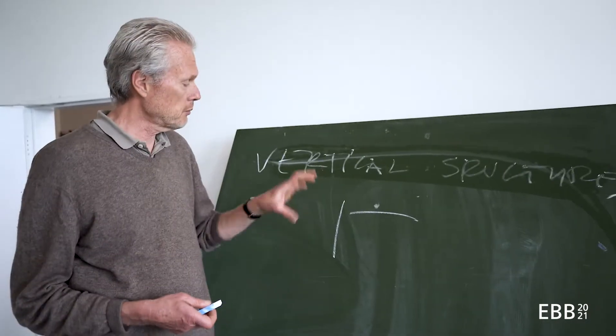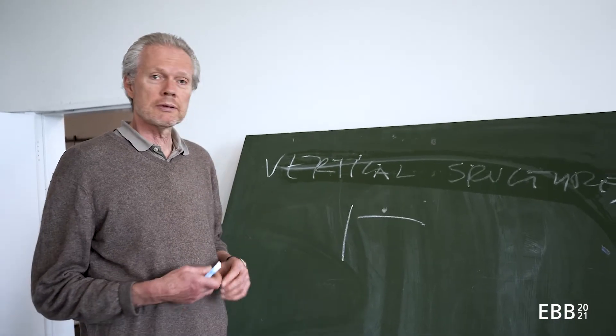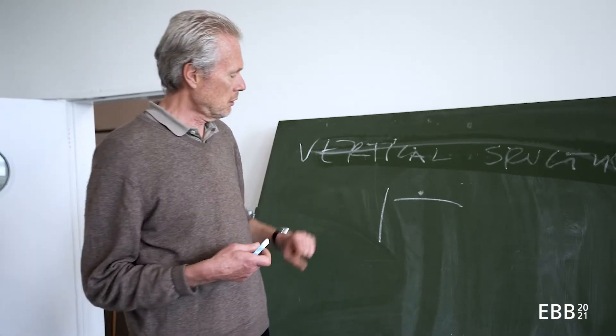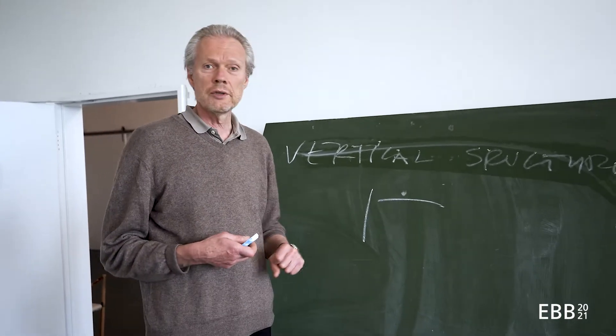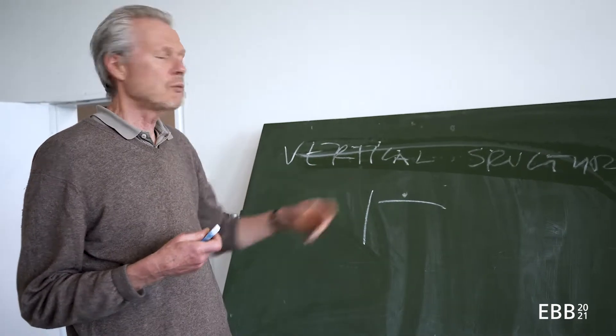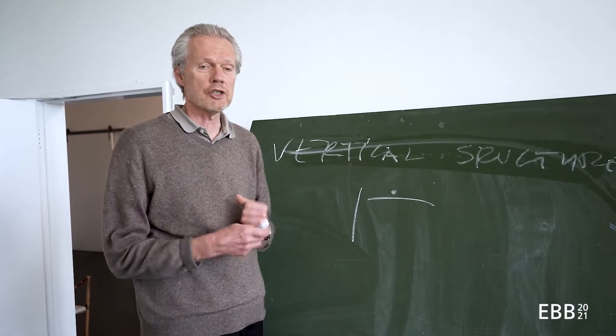You can have a masonry wall and a wood slab, or you could also combine steel columns and concrete slab. So there are many ways of combining materials and construction methods.